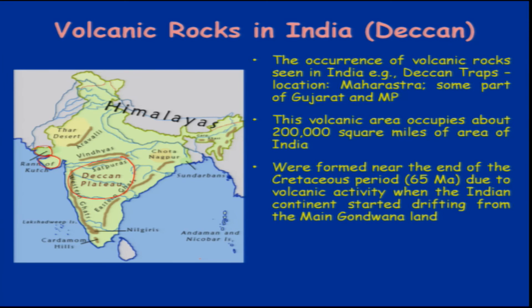These igneous rocks were formed near the end of the Cretaceous period, around 65 million years ago, due to volcanic activity when the Indian continent started drifting from the main Gondwana land.